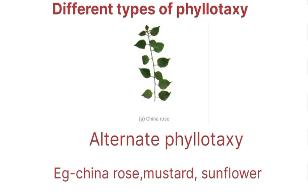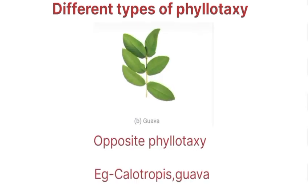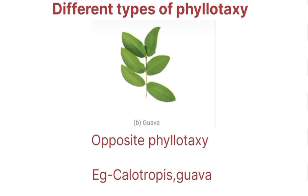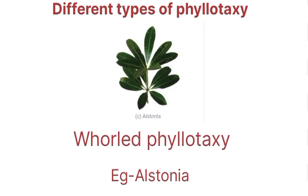Different types of phyllotaxy: first is alternate phyllotaxy — examples are china rose, mustard, sunflower. Next is opposite phyllotaxy — examples are Calotropis and guava. Next is whorled phyllotaxy — example is Alstonia.